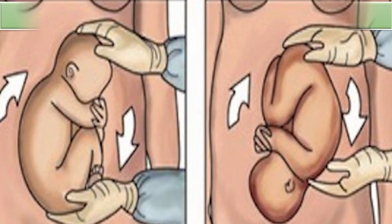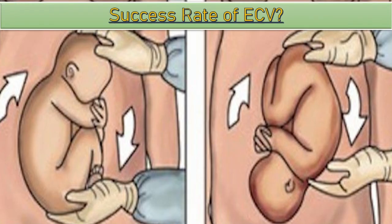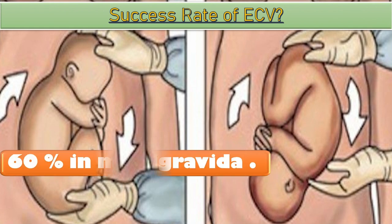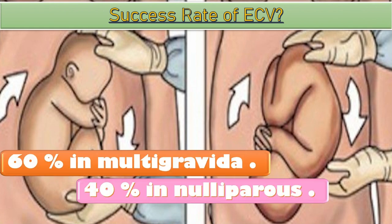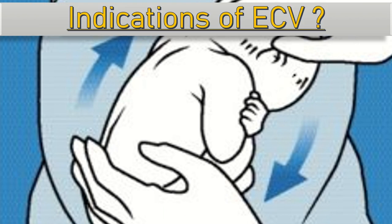How much is the success rate of external kephalic version? It is 60% in multigravida and 40% in nulliparous women. What are the indications of external kephalic version?